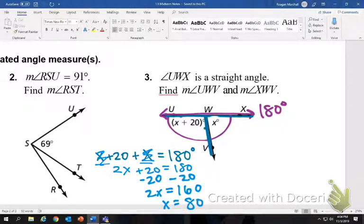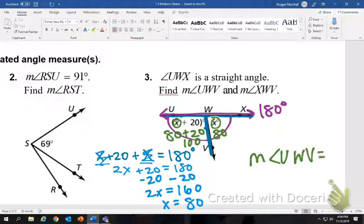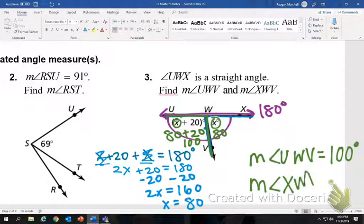It did not ask what X was, it asked what the angles were. So we're going to plug them back in. We're going to plug in for X, 80 plus 20 makes this one 100 degrees. This one literally is X, so it is 80 degrees. So we're going to say the measure of angle UWV, which was this first one, is 100 degrees, and the measure of angle XWV is 80 degrees.